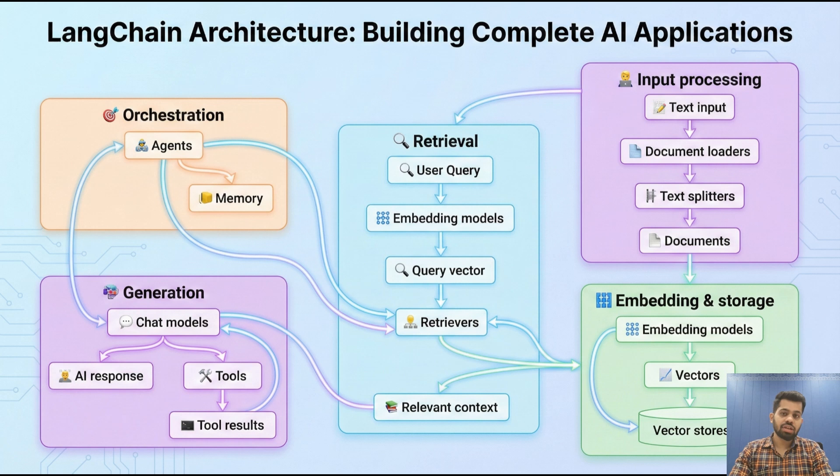That's the entire architecture. So from raw text input to vector stores, through the search and retrieval process, managed by agents and memory, and finally synthesized by chat models - that is the complete sequential journey of how LangChain components connect to power complete AI applications. The beauty of LangChain is this structured, interconnected flow. Inputs become vectors, which are searched in retrieval, managed by agents and memory, and synthesized by chat models into AI responses.